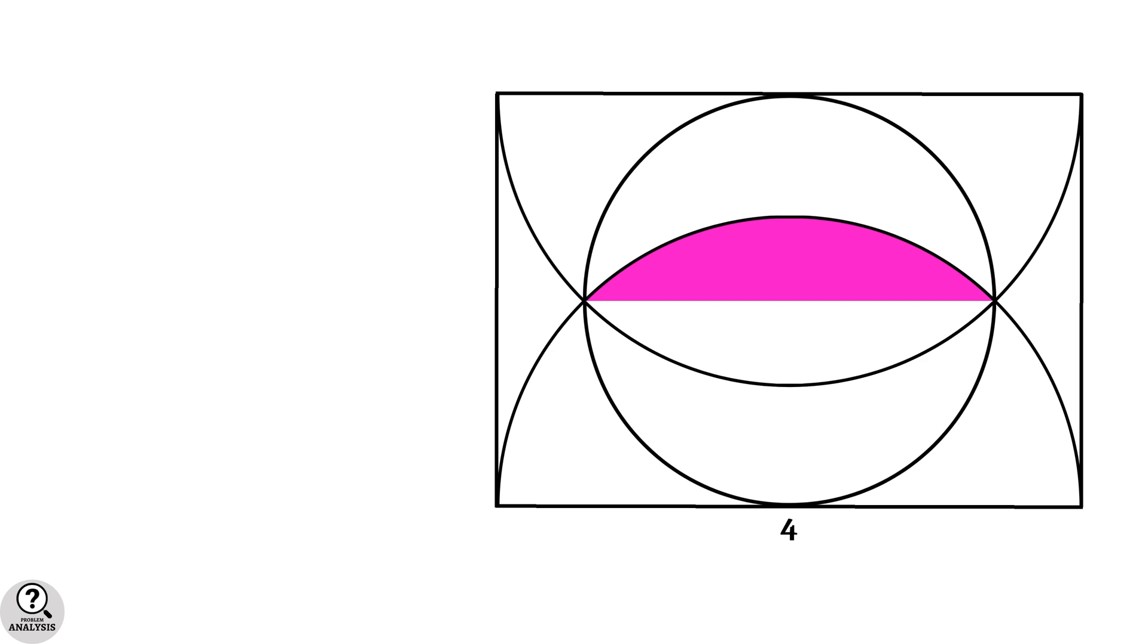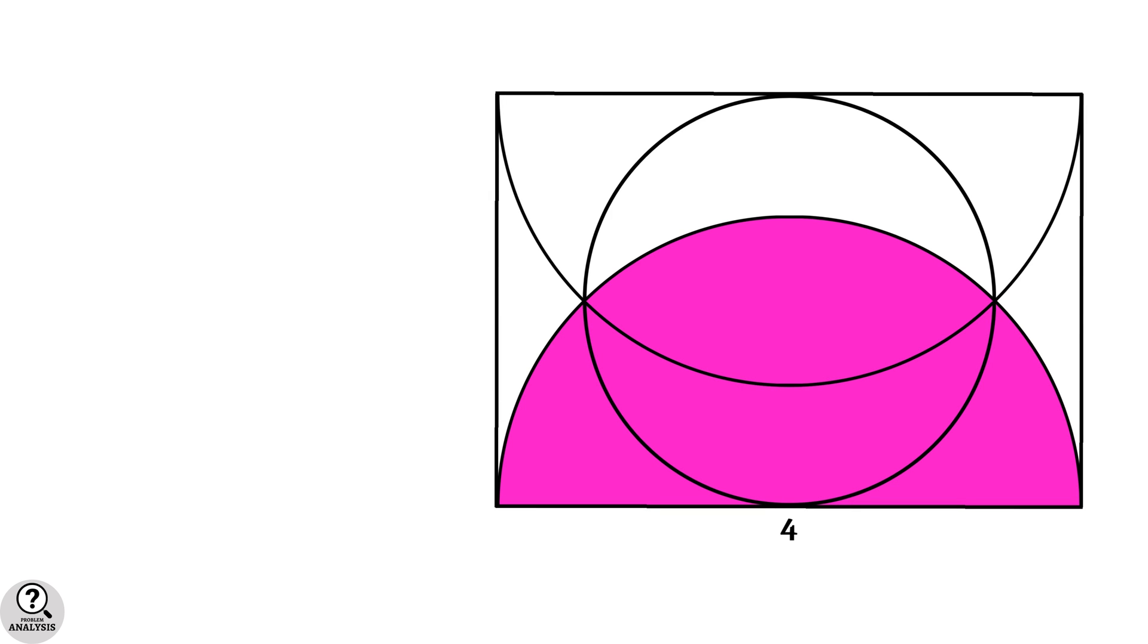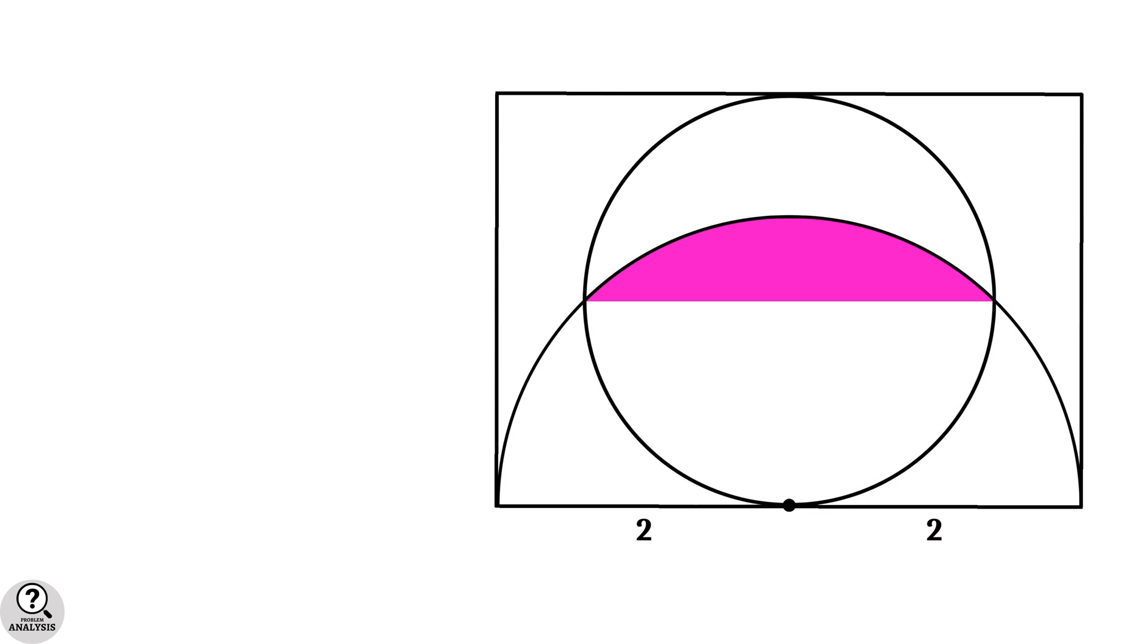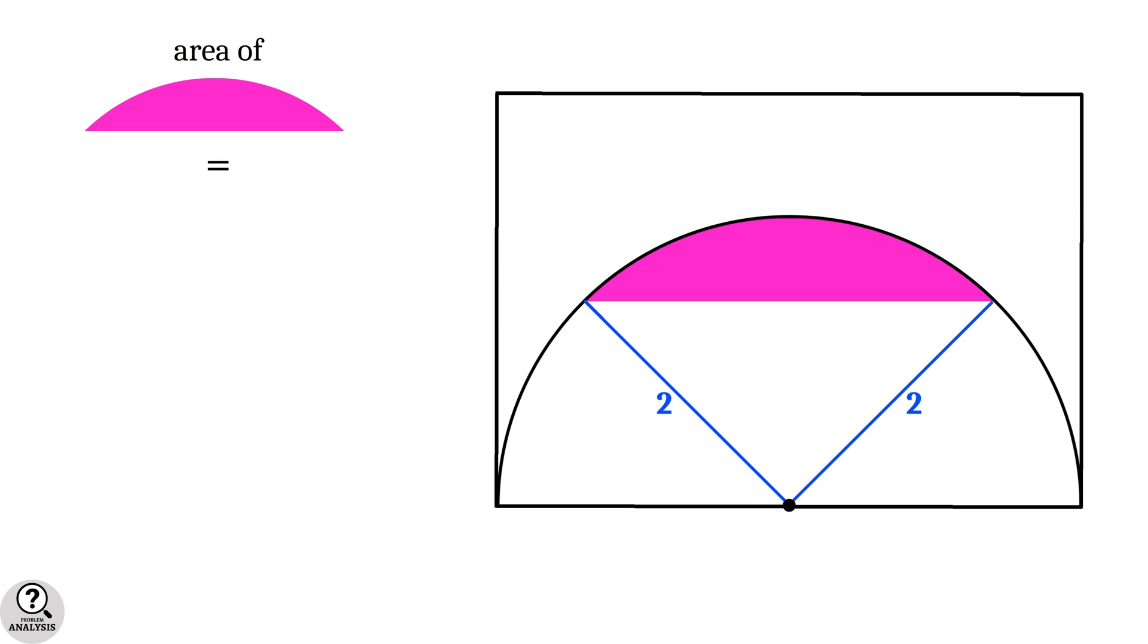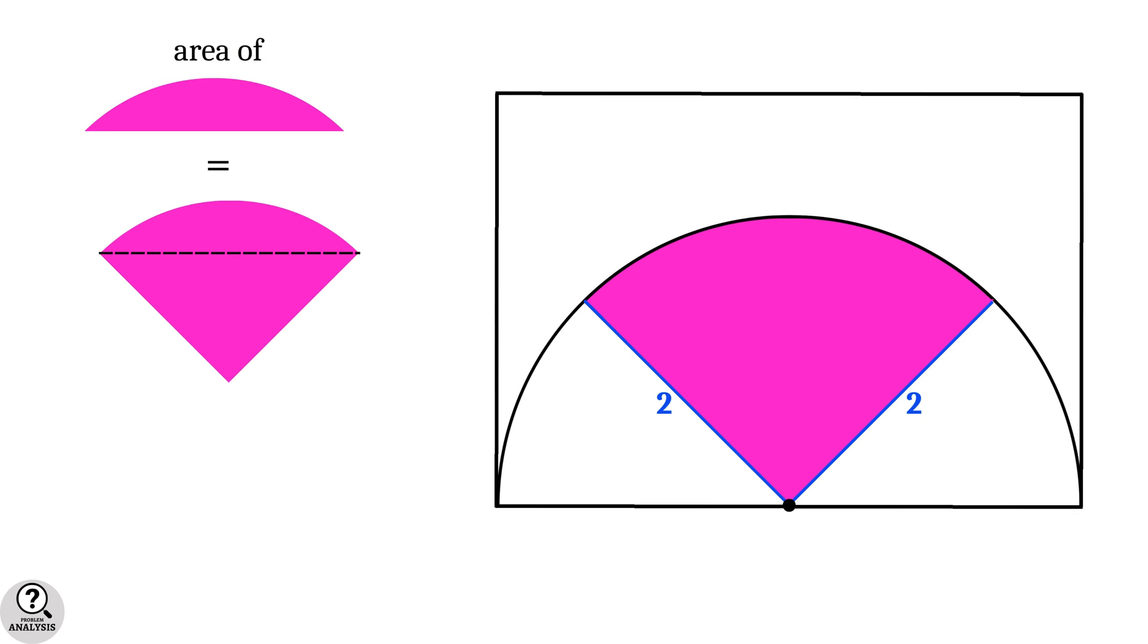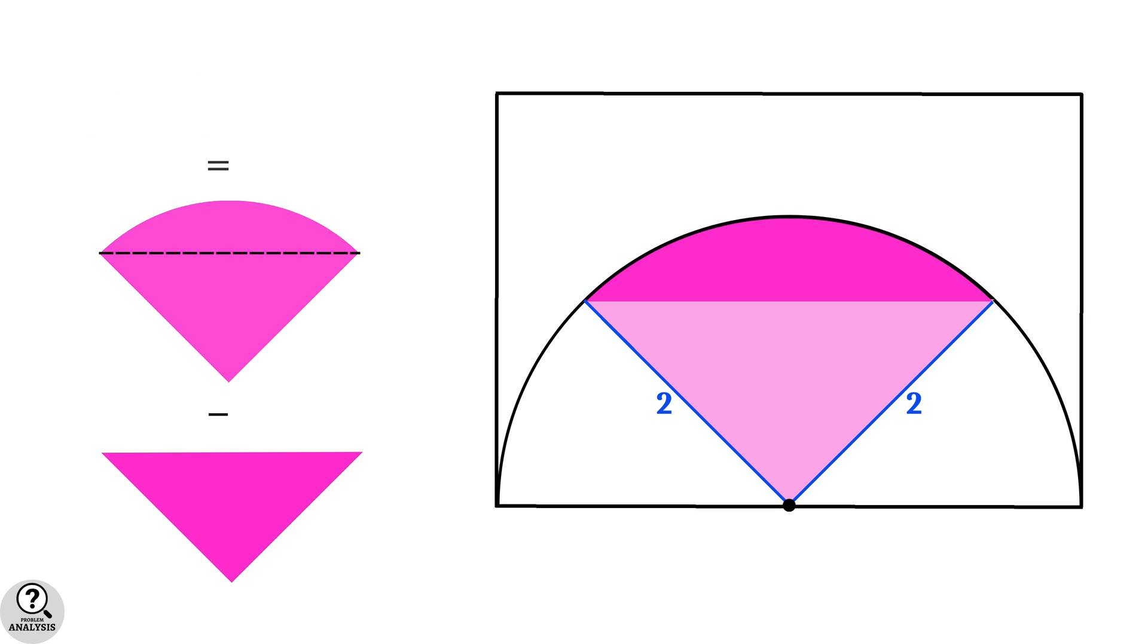Next, consider this semicircle. Since the diameter is four units, its radius will be two units. Now consider our horizontal half and draw these two radii to both ends. Then we can see a circular sector here. Therefore, area of the horizontal half can be calculated by area of the sector minus area of this triangle.